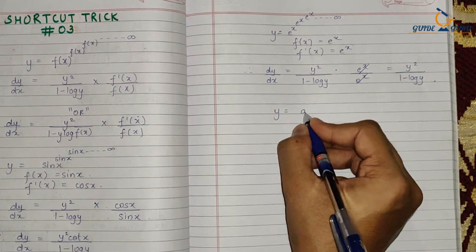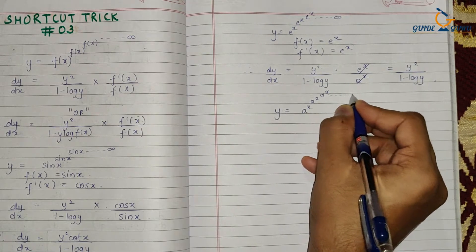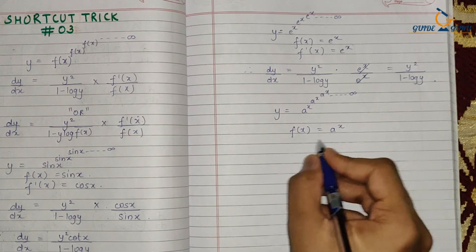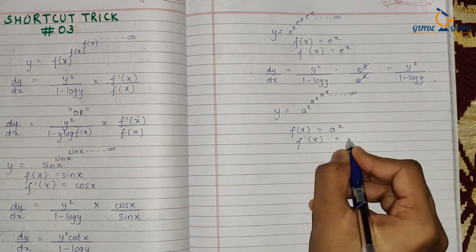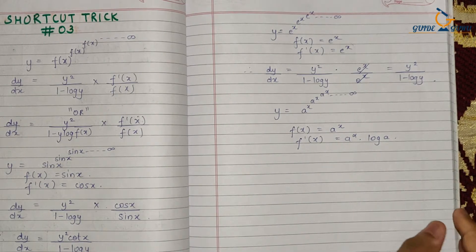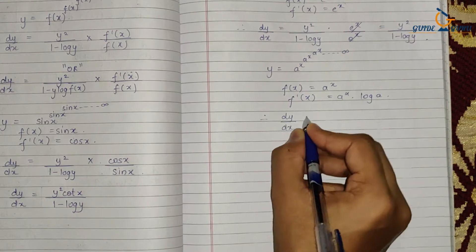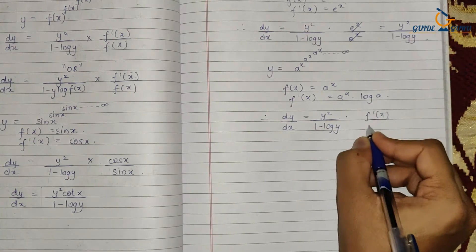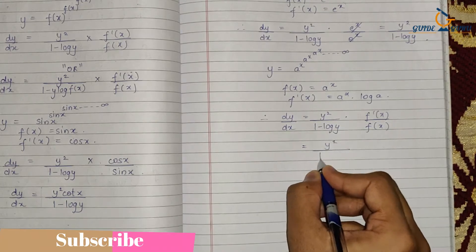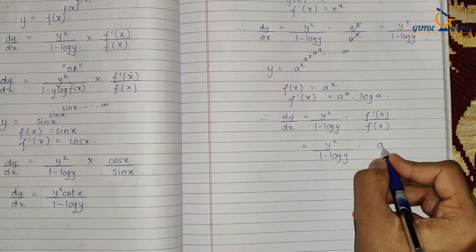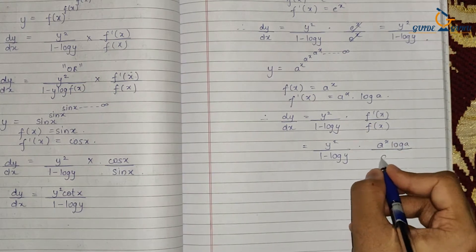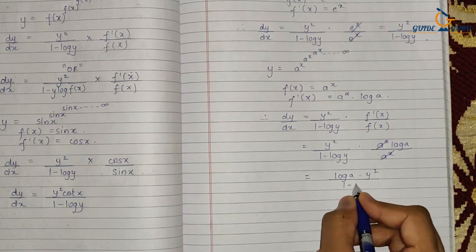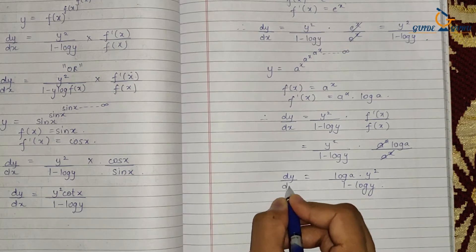Consider y = a^x raised to a^x raised to a^x going on till infinity. The function is a^x, and its derivative is a^x·log(a). Applying the shortcut: dy/dx = y² upon (1 − log y) into (a^x·log a) / a^x. The a^x terms cancel, giving dy/dx = log(a)·y² / (1 − log y).